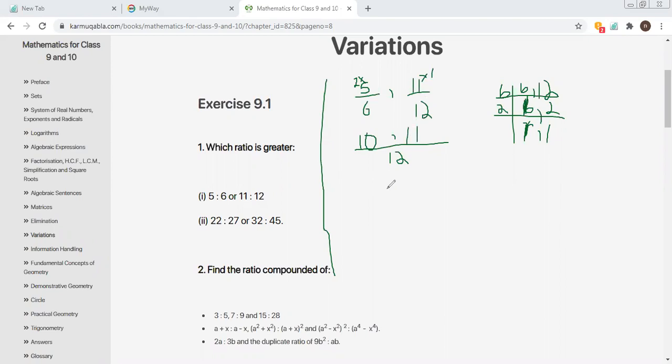Here you can see that on the right hand side, 11 upon 12. This one is greater than 10 upon 12, so 11 upon 12 is greater. That's question number one.